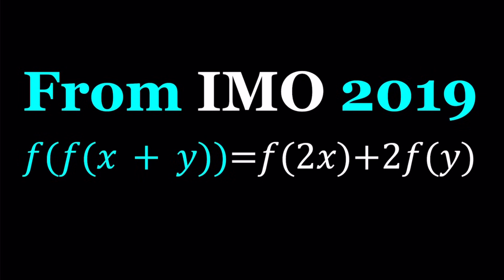Hello everyone. In this video, we're going to be solving a functional equation from International Math Olympiad 2019. So f is a function from integers to integers, and f(f(x+y)) = f(2x) + 2f(y). x and y are integers, and we're going to be solving for f.